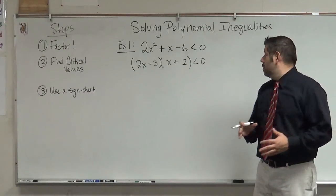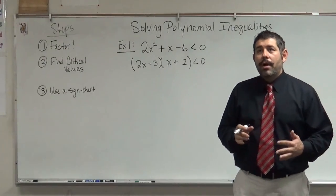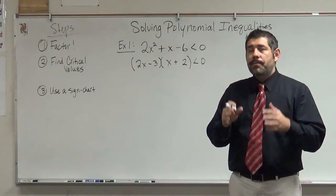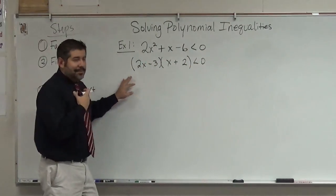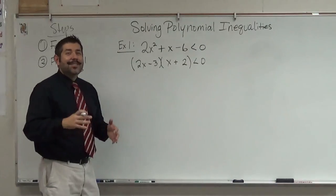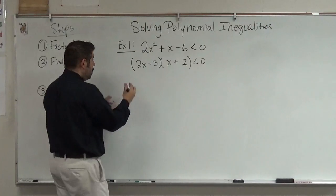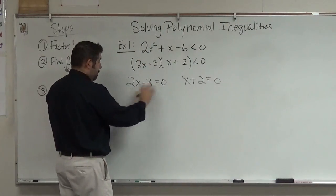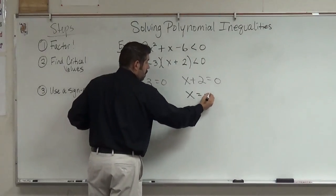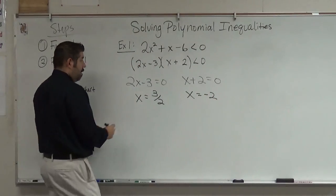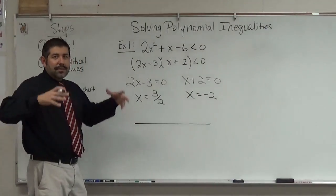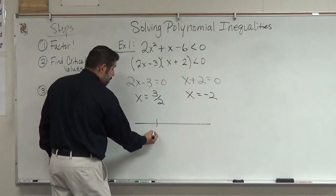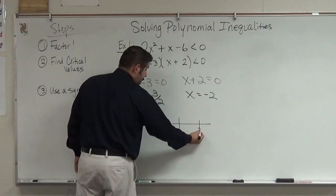Now since we have it factored, we're going to find the critical values. The critical values, if you remember from the graphical approach, are x-intercepts — the values that make the expression equal to zero. So we set each factor equal to zero: 2x minus 3 equals 0 and x plus 2 equals 0, and we solve each of these. So these are our critical values. We're going to use a number line — a sign chart — and I'll show you where the signs come from. We're going to plot these on a number line: negative 2, 0, and 3 halves.